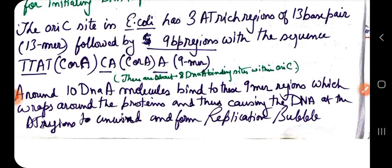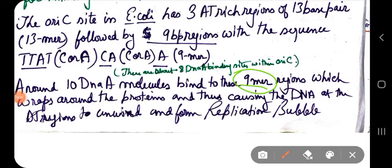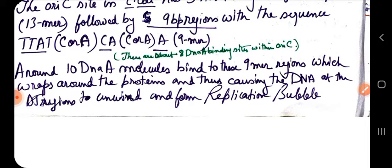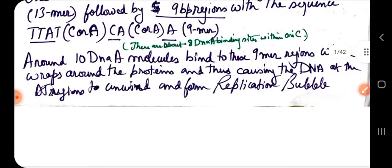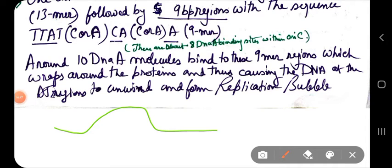Around ten DnaA molecules bind to these 9-mer regions, which wrap around the proteins, causing the DNA at the AT-rich regions to unwind and form the replication bubble. The replication bubble is the result of the unwinding of the DNA strands — initiated by DnaA.